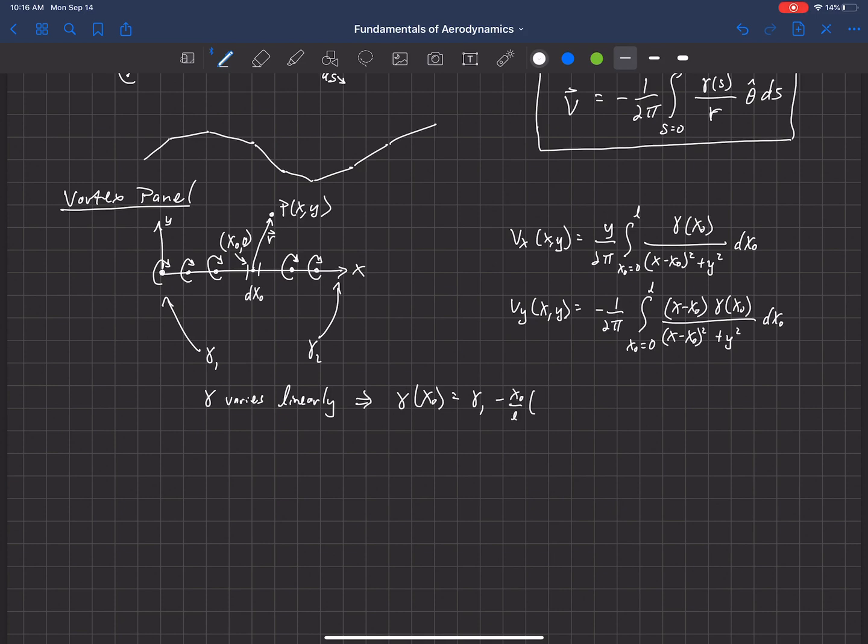The function for γ(x_naught) will be γ₁ - (x_naught/l)(γ₁ - γ₂). So that's just a function that shows us that γ is varying linearly across that panel. We can plug that in again into these two equations here for γ and get out an expression for the velocity in the x direction and the velocity in the y direction for any panel, any vortex panel that varies linearly in strength. What we get is 1 over 2πl times - I'm going to again write this in matrix form.